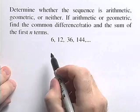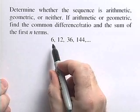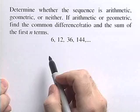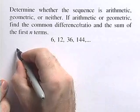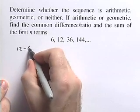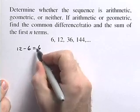The first thing we're going to do is check to see if this sequence is arithmetic. The way we do that is we look at the difference between consecutive terms. So if we look at the first two terms, we'll have 12 minus 6, that's equal to 6.